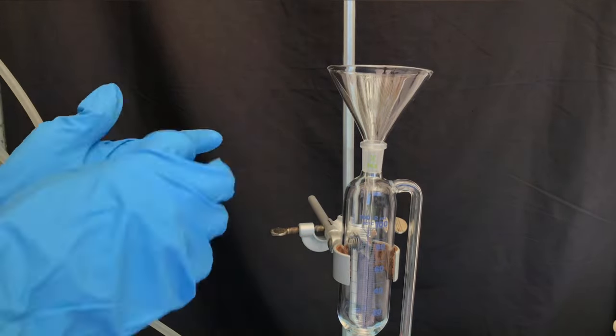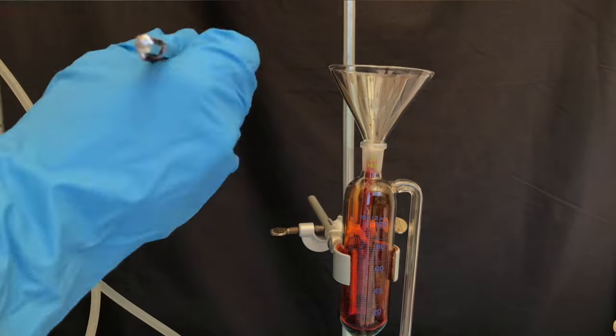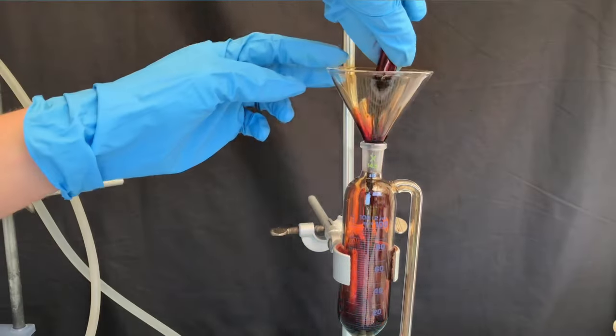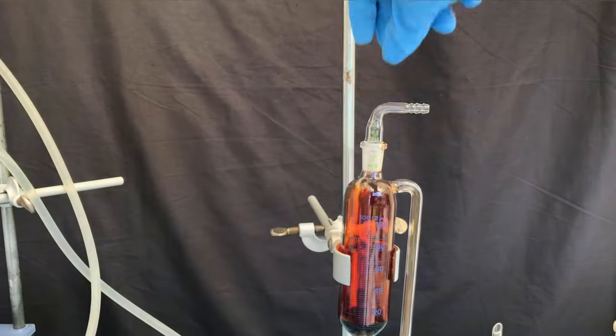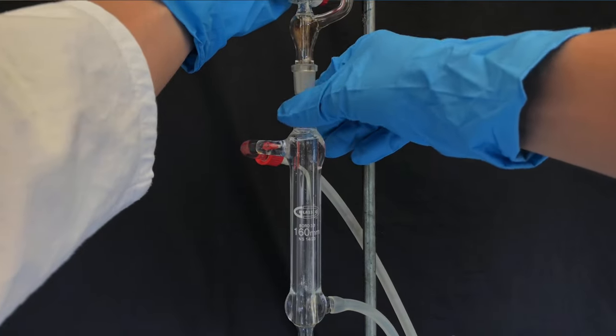The 11 milliliters of bromine were added to a pressure equalizing addition funnel. Just look at these beautiful red and deadly vapors. The gas mask wasn't our only safety precaution. We also had a fan running on high speed in the background. Grease was applied to the joints and everything was connected.